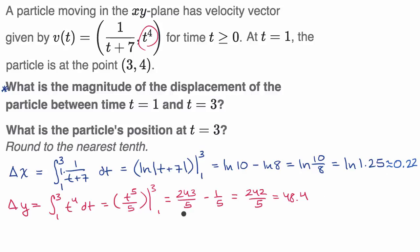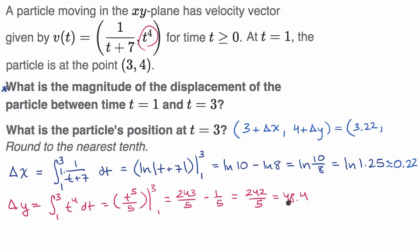Now we can answer the second part: what is the particle's position at t = 3? We take the position at t = 1 and add the respective changes. So the x-coordinate is 3 + 0.22 ≈ 3.22, and the y-coordinate is 4 + 48.4 = 52.4. The particle's position at t = 3 is approximately (3.22, 52.4).